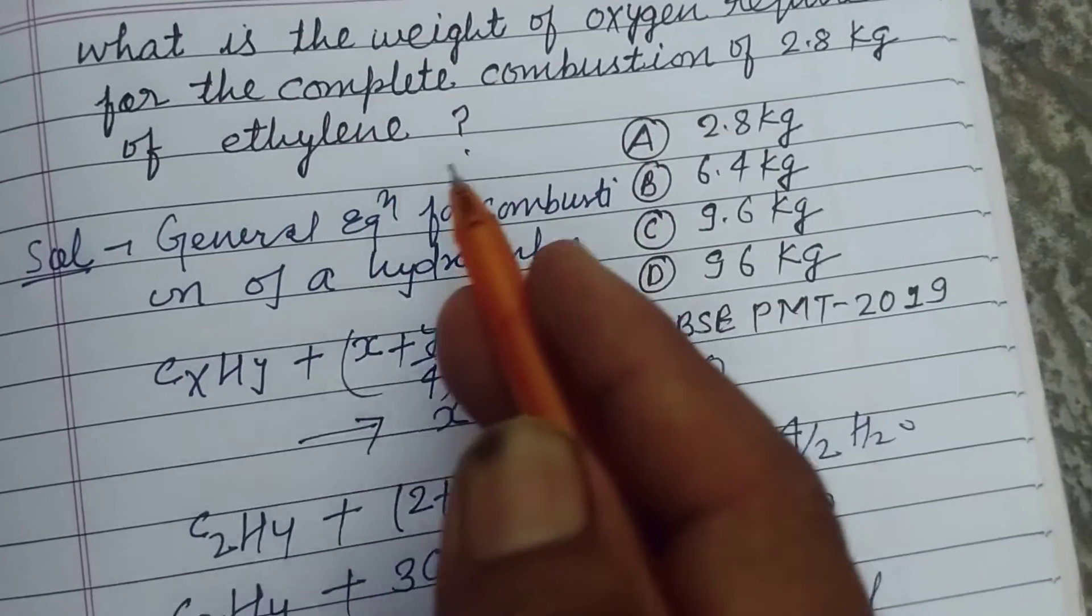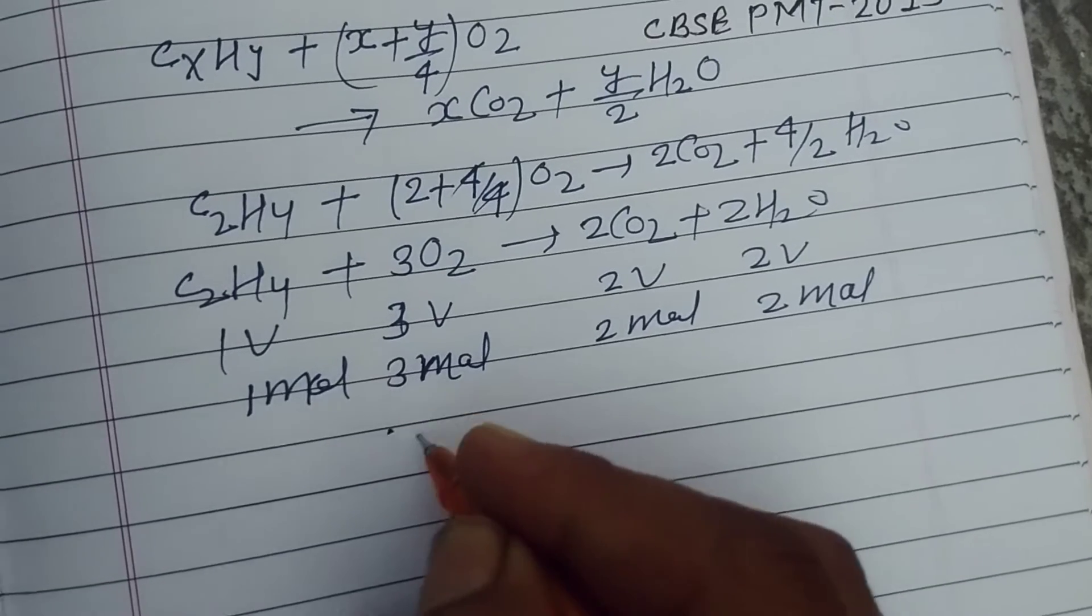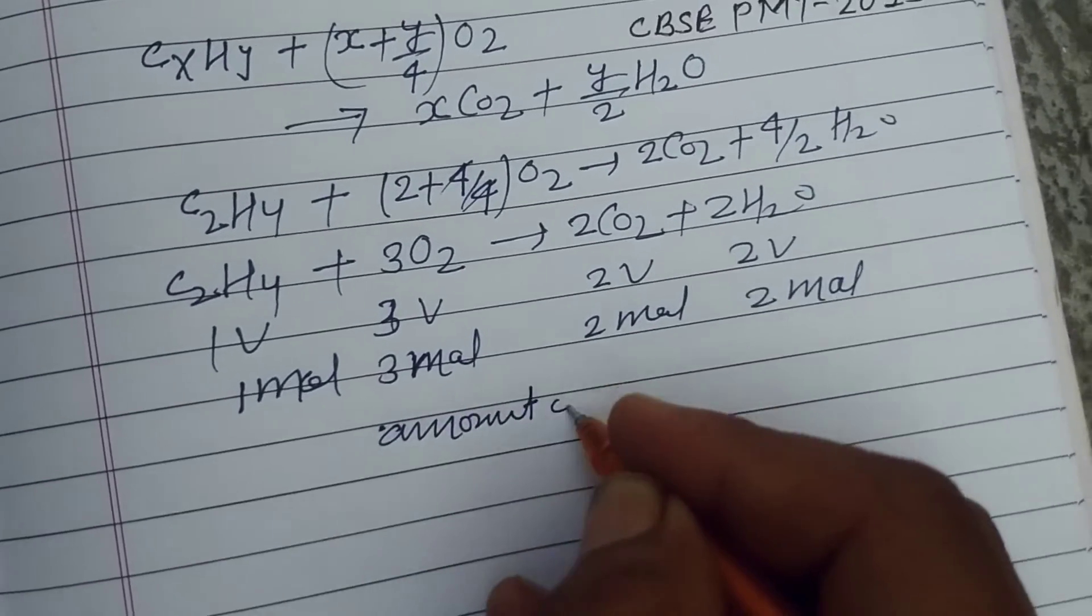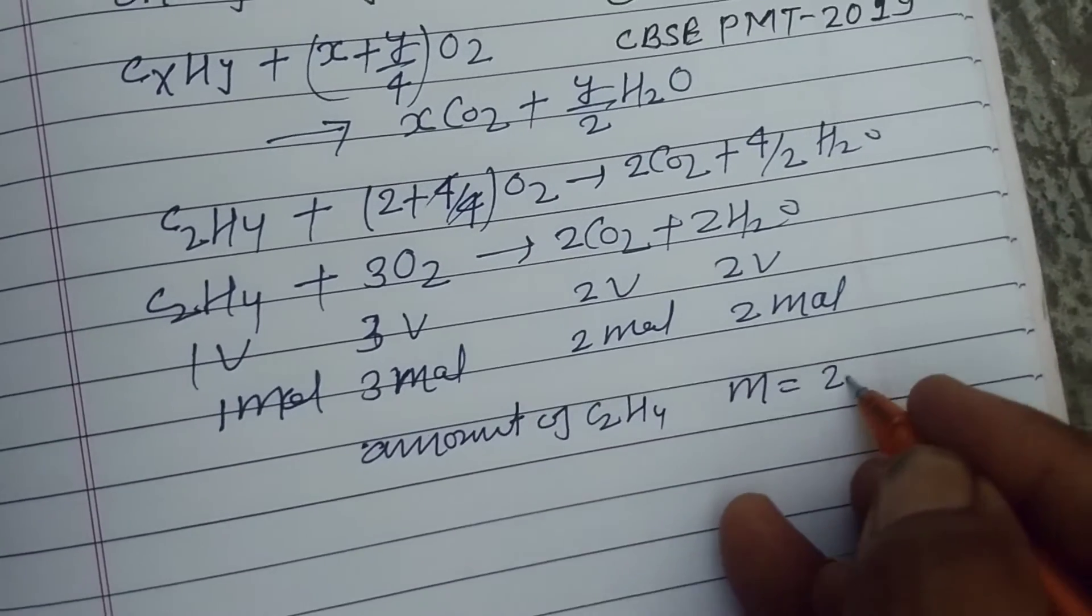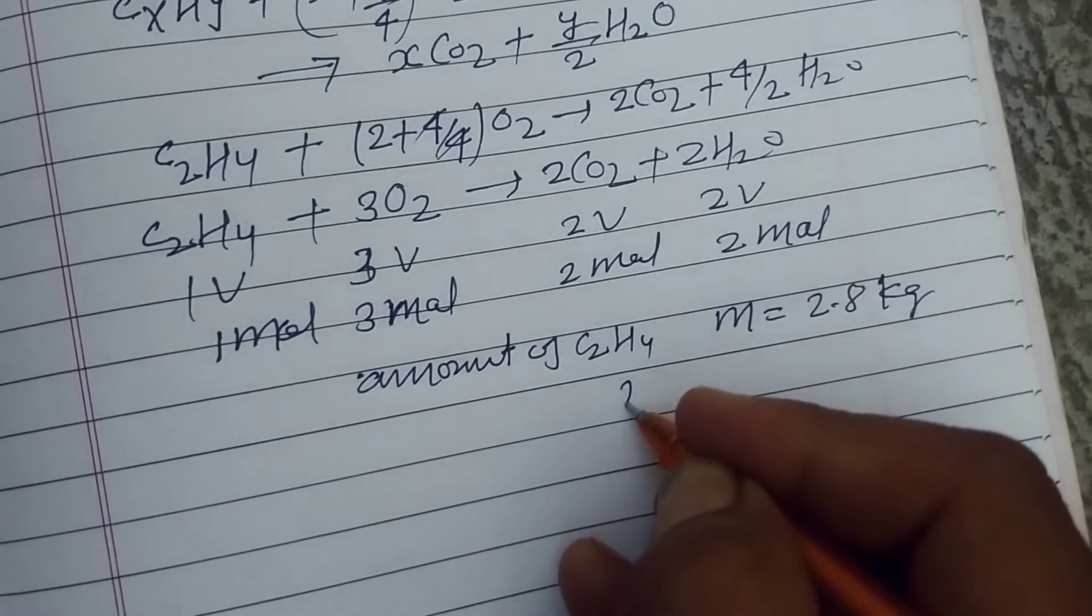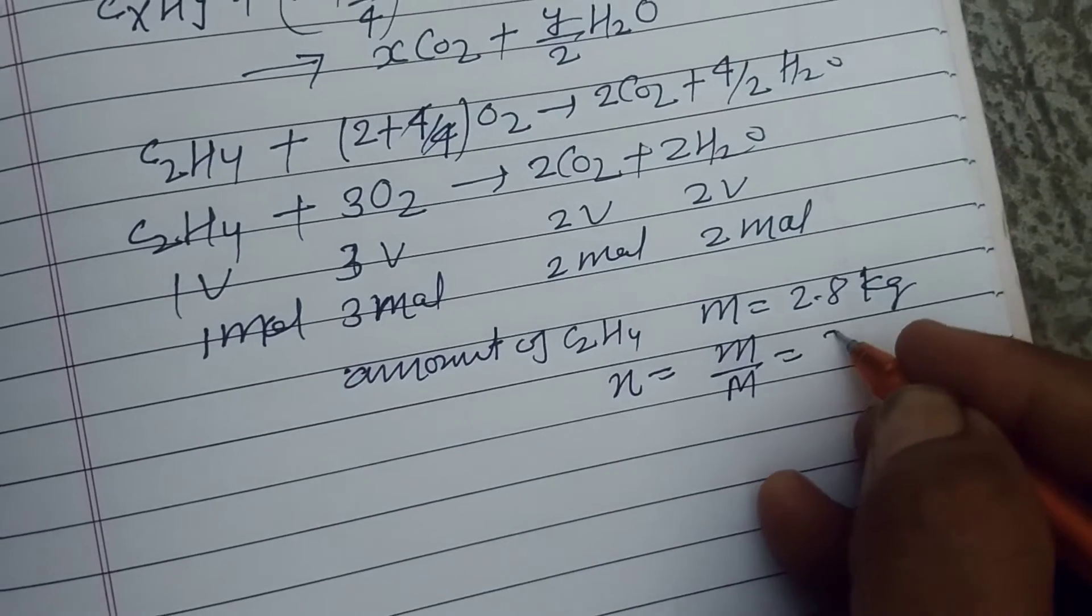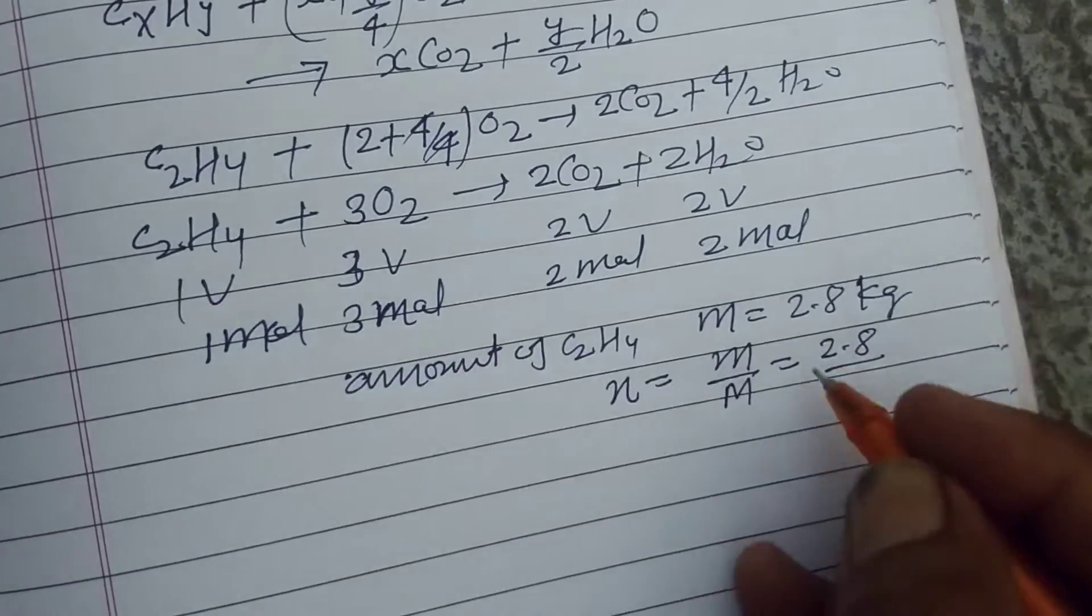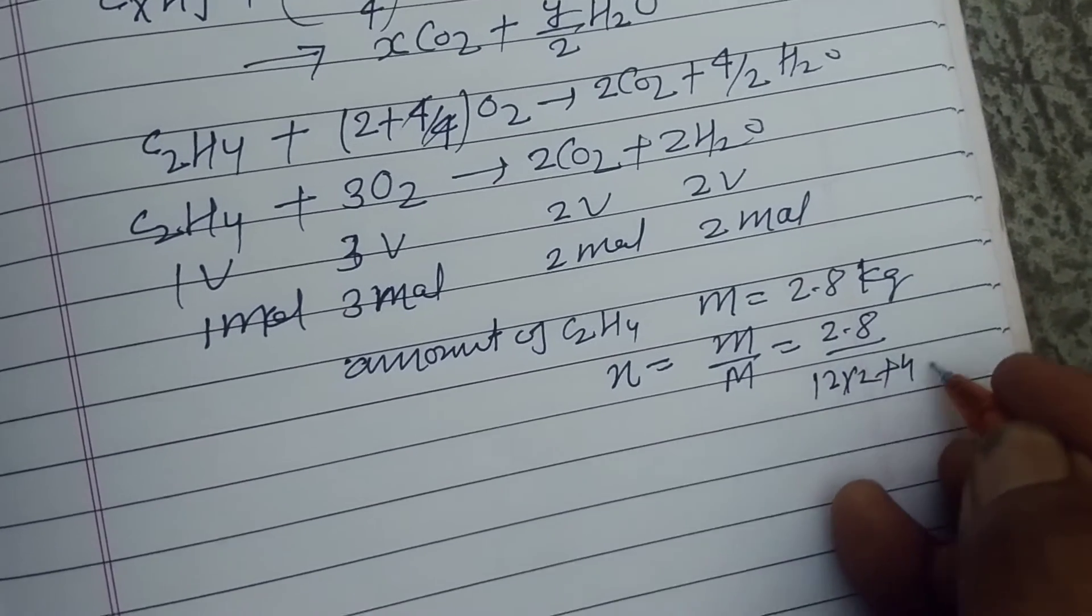The weight of ethylene - amount of C2H4 is given to us as 2.8 kg. So its number of moles is equal to mass over molecular mass. So 2.8, molecular mass of ethylene is C2, it means 12 into 2 plus 4 into 1.